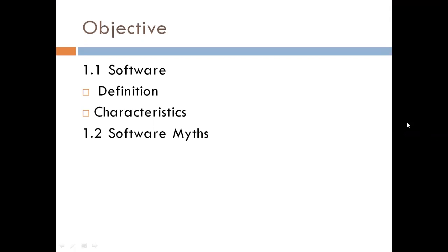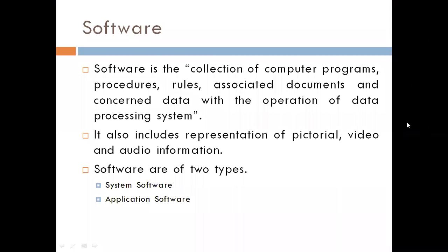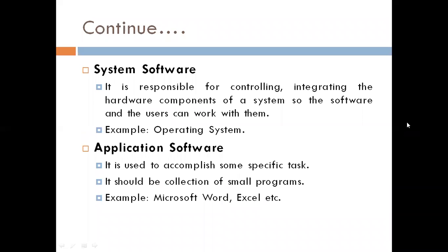What is software? Software is the collection of computer programs, procedures, rules, associated documents, and concerned data with the operation of a data processing system. It also includes representation of pictorial, video, and audio information. There are two types of software: system software and application software.